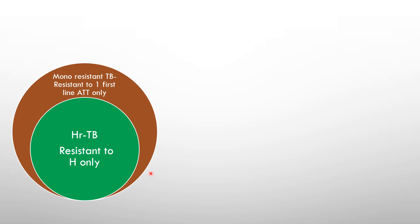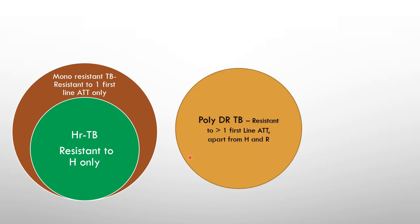This is the circle which shows mono-resistant TB — resistant to only one first line ATD. Under this comes isoniazid resistant TB, which shows resistance to isoniazid only. And second is polydrug resistant — poly means more than one first line ATD.